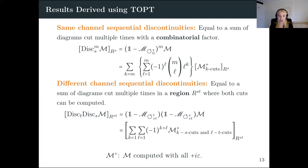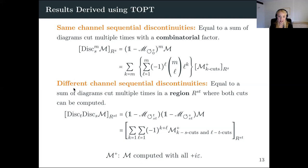These are the results we derived using time-ordered perturbation theory. First, for same-channel sequential discontinuities: taking m discontinuities in the variable S of the amplitude in region R_S, computed by applying the monodromy operator m times, equals a sum over amplitudes computed with all plus-I-epsilons and a combinatorial factor. We also proved a formula for sequential discontinuities in different channels: taking discontinuities in S and then in T, in region R_{ST} where both cuts in S and T can be computed, equals the sum of cuts in both S and T.